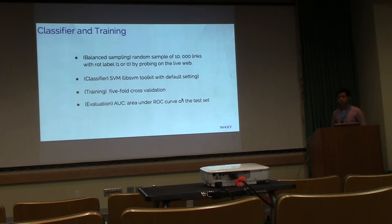So now I've introduced the features, now talk a bit more about the classifier and training. We basically sample a random sample of 10,000 links with their rot labels. We make sure they are balanced, so we have the same equal number of positive and negative examples for training the classifier. We just use SVM with the default setting as a classifier and use five-fold cross-validation to train the classifier. And then for evaluation purposes, we use the standard classification metric AUC, the area under the ROC curve.